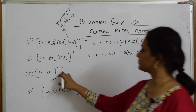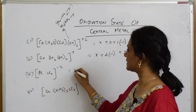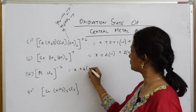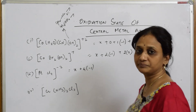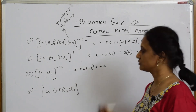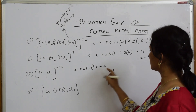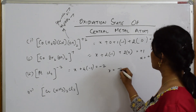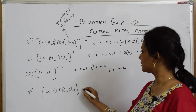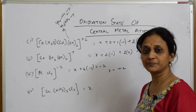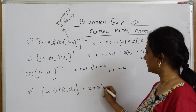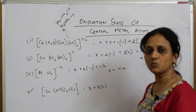For the platinum complex: X for platinum, chlorine contributes 4 × (−1), and the overall charge is minus 2. Solving: X − 4 = −2, therefore X = +2.